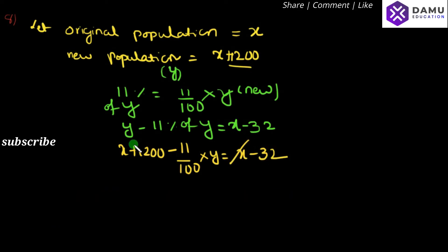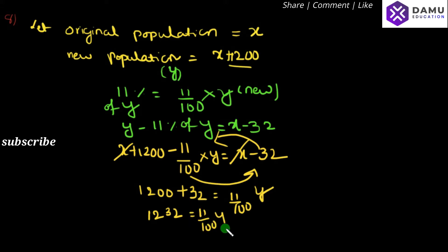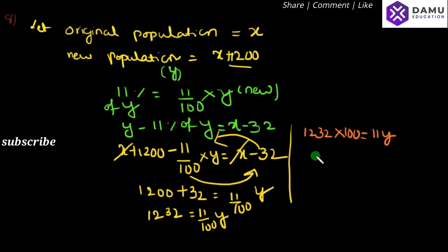The X on both sides cancels out. Rearranging, 1200 plus 32 equals 11 by 100 into Y. So 1232 equals 11 by 100 into Y.